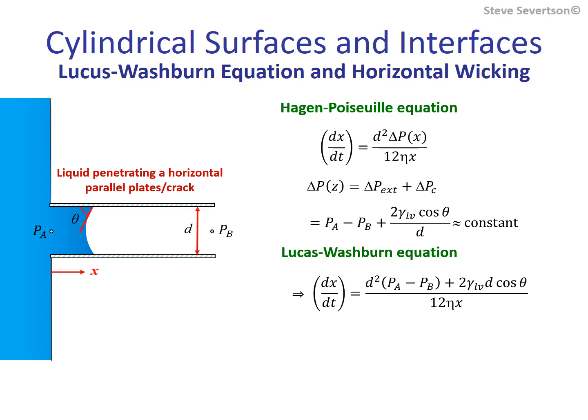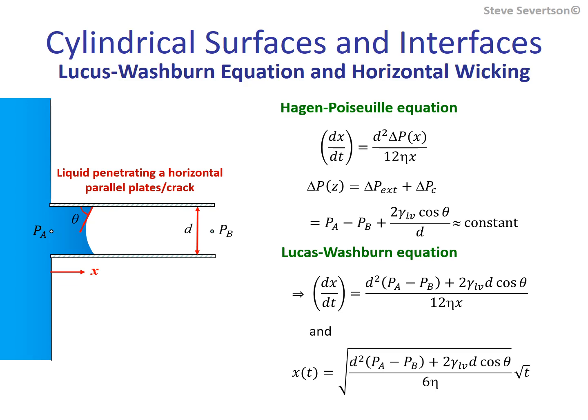Solving this differential equation provides a relationship between the penetration distance and time. These equations also apply to the movement of the meniscus in the opposite direction to counter an external gradient. If the plates are oriented vertically, the pressure change becomes a function of height, and the same approach used for a vertical cylindrical tube would apply. This is left as an exercise.